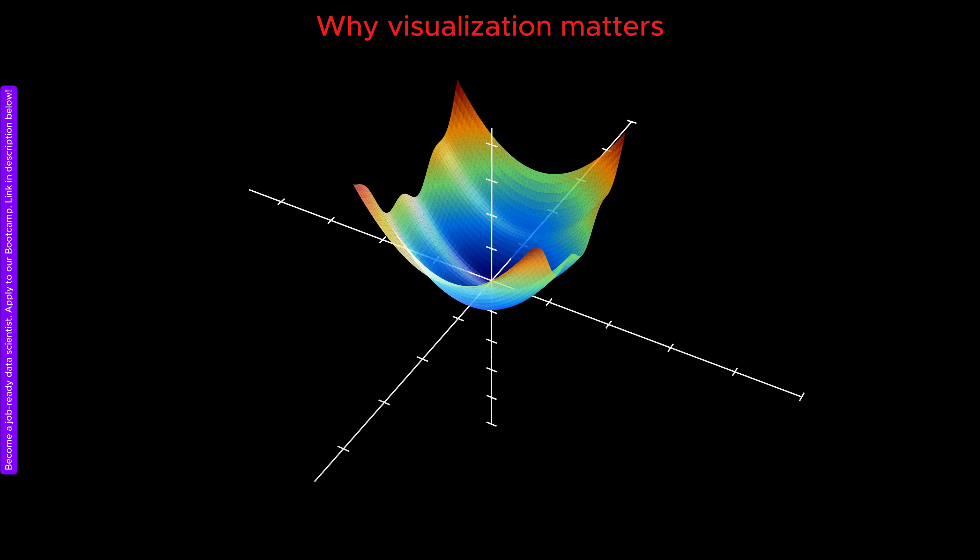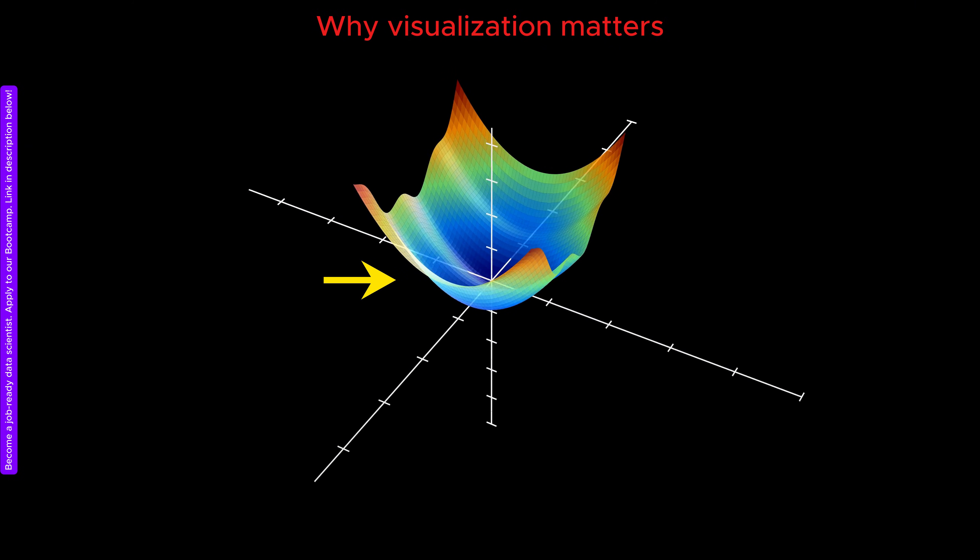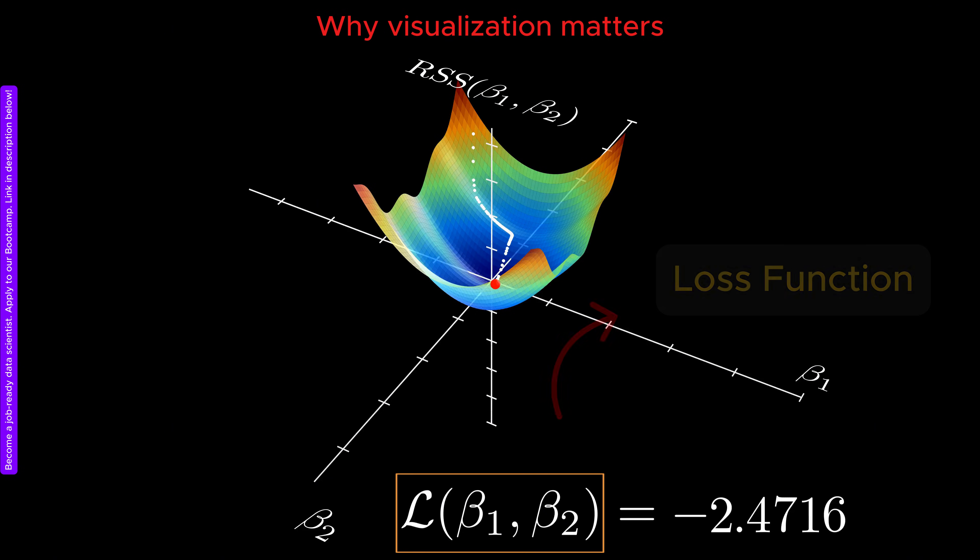Let us start with the loss function landscape. The majority of machine learning models are trained by minimizing some notion of error in their predictions. Technically, this error is called the loss function.